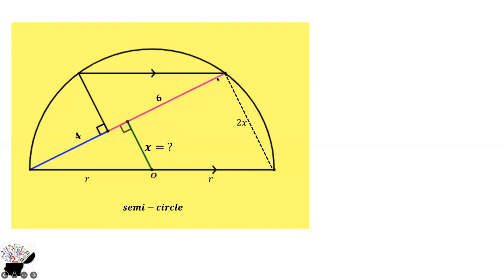This angle is 90 degrees, and we know that this line is parallel to this line. So using alternate angles, if this angle is beta, this angle is also beta. And since this side is 90 degrees, let's say this angle is theta — which means this angle is also theta.